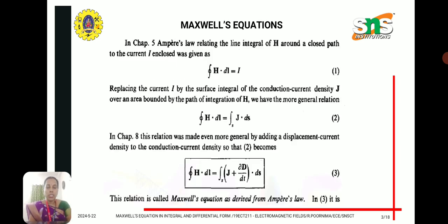The first equation is derived from Ampere's law, which we discussed already in magnetostatics. It is the line integral relating H vector dot dl equal to current, where current is replaced by the surface integral of J dot ds. So we can write: integral H dot dl equal to integral of (J plus ∂D/∂t) dot ds, where the second term is the displacement current density. This is the integral form of the first Maxwell's equation.